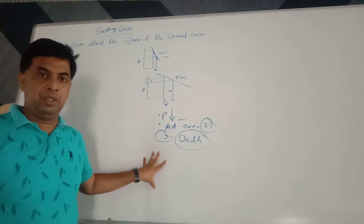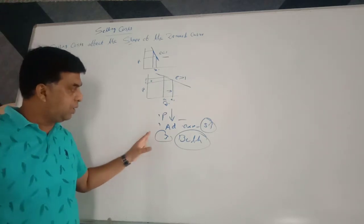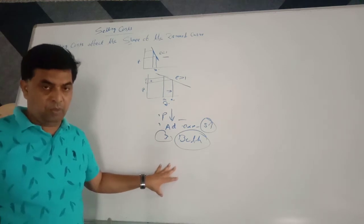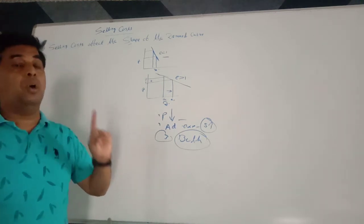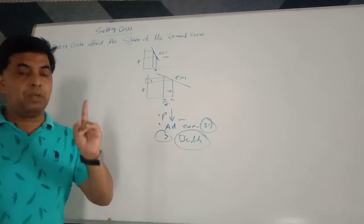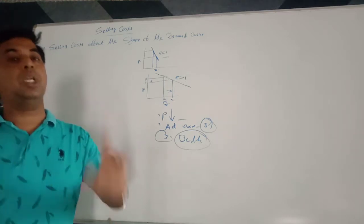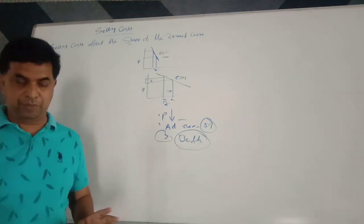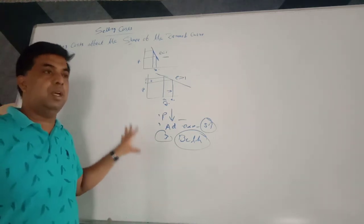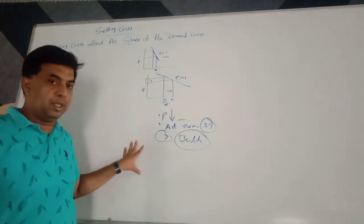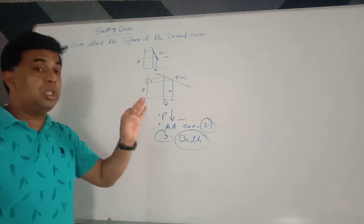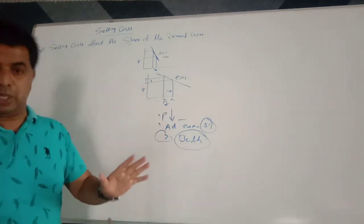When you adopt both alternatives together, it will not only change the location but it will also change the shape of the demand. Along with price reduction, when you incur selling cost, it will change the shape of the demand.